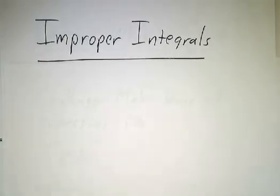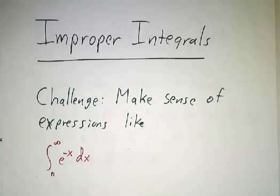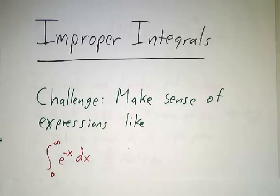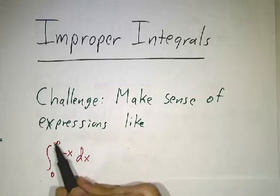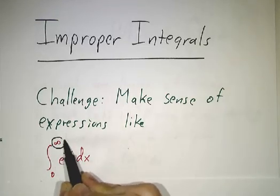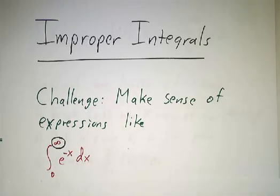In this video we're going to start to learn about improper integrals. The object of the game is to make sense of expressions like the integral from zero to infinity of e to the minus x dx. We know what integrals are in general — areas under the curve or limits of sums — but the funny thing here is we're taking an integral out to infinity, and we don't know what that means yet.